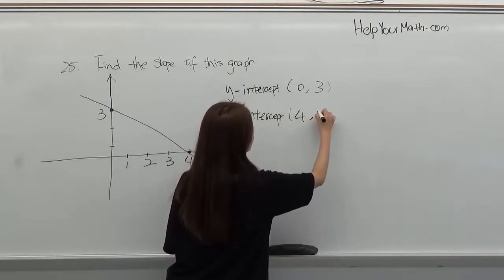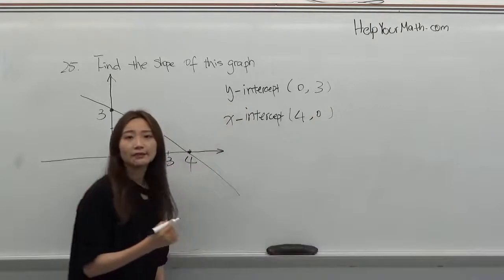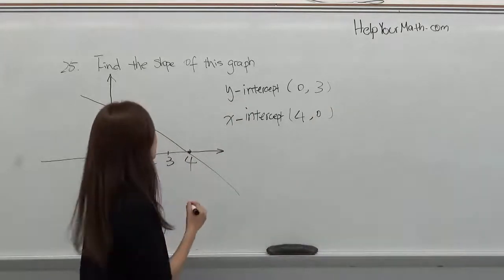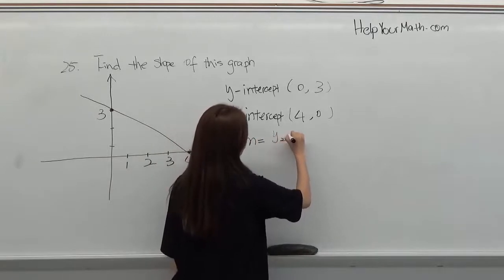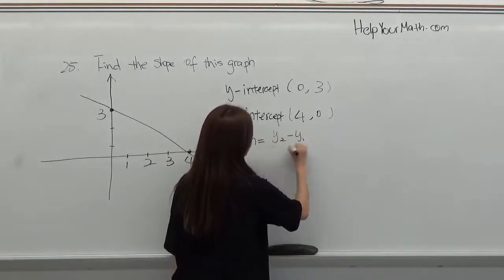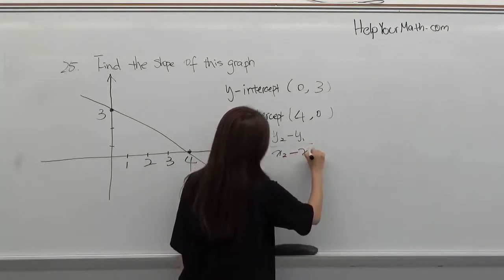Now we have to use the slope equation to find the answer. m equals y2 minus y1 divided by x2 minus x1.